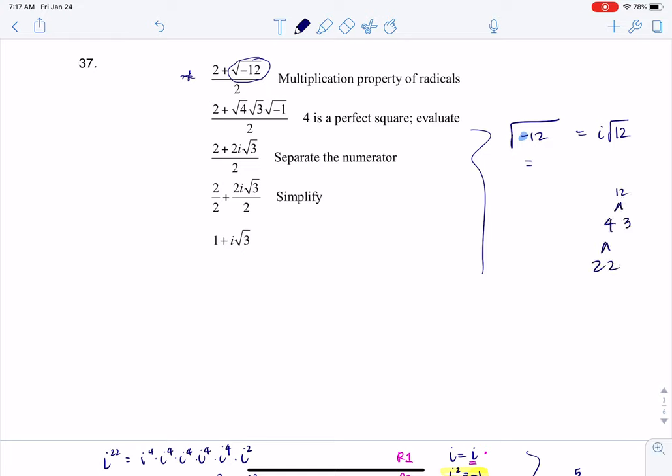So this is i times the square root of 2 squared times 3. Because we have a 2 with that exponent of 2, it can come out of that radical.